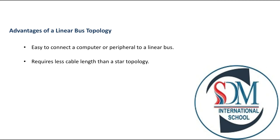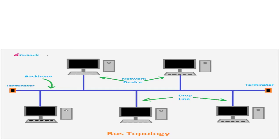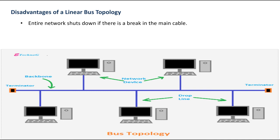In bus topology, fewer cables are required compared to star topology, which we will discuss later and which uses more cables than bus topology. The first disadvantage of linear bus topology is that if there is a breakage in the main cable, the entire network will shut down. Also, terminators are required at both ends of the backbone cable.